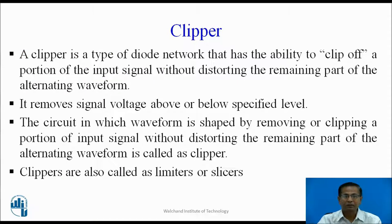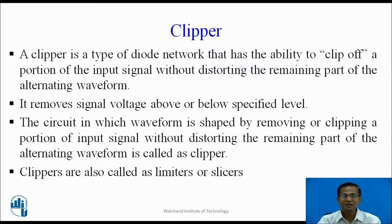A clipper is a type of diode network that has the ability to clip off a portion of the input signal without distorting the remaining part of the alternating waveform. It removes signal voltage above or below a specified level. The circuit in which the waveform is shaped by removing or clipping a specific portion of the input signal is called a clipper. Clippers are also called limiters or slicers.